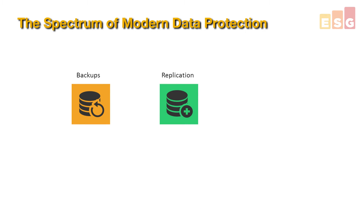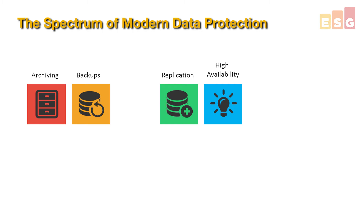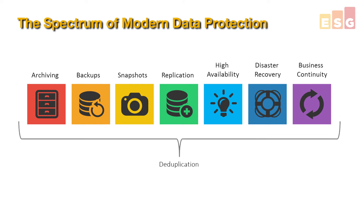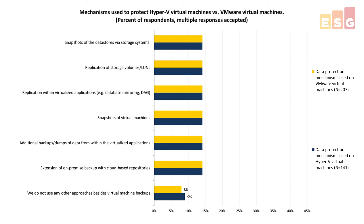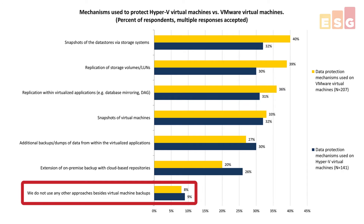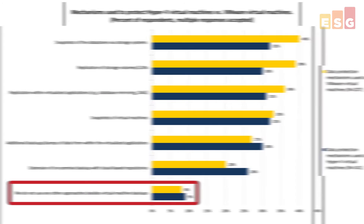Long gone are the days when backup and data protection were synonymous. Today, data protection is more of a spectrum of methods for ensuring agile data usability. IT architects need to consider a range of data protection mechanisms in order to provide the agility that employees require to access their data. Backups are certainly underpinnings, but it's often advantageous to supplement them with snapshots, replication, or both. This is even more important in highly virtualized environments. In fact, a wide range of snapshotting and replication options are in use today. And yet the most telling statistic on this chart is the one on the bottom, where less than 10% of virtualized environments are being protected by VM backups alone.